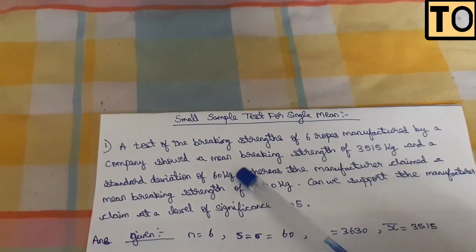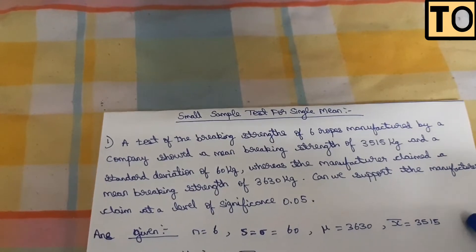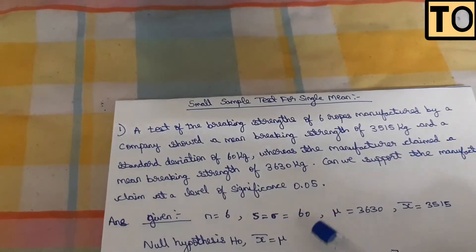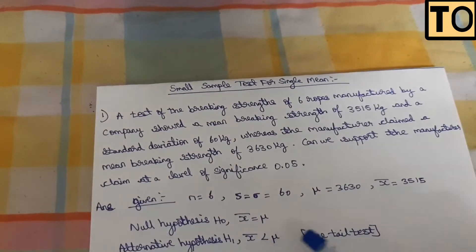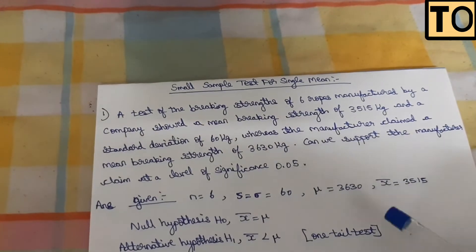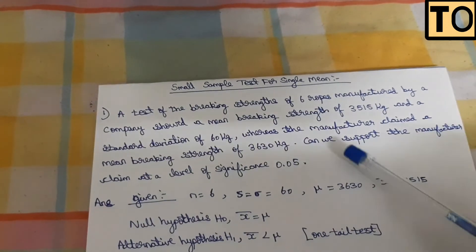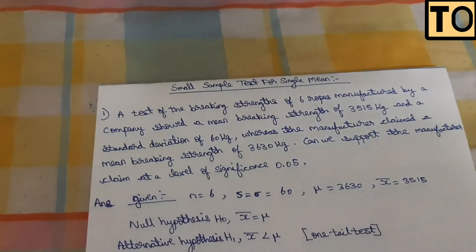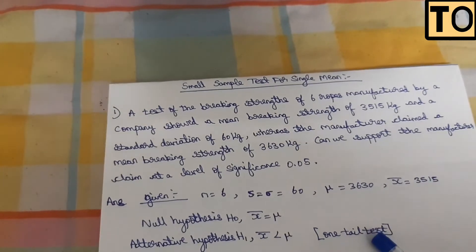Next, the hypothesis. We calculate that X bar is smaller than mu. Because X bar is less than mu, we will test a one-tail test.